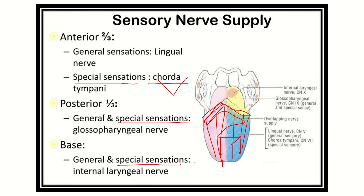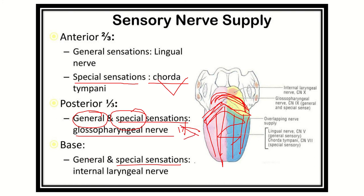Moving to the posterior portion: the posterior one-third of the tongue is supplied by cranial nerve nine — the glossopharyngeal nerve. In this region, both general and special (taste) sensation are carried by the glossopharyngeal nerve. This is an easy point to remember.